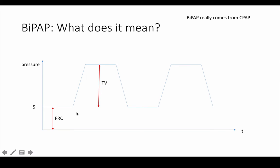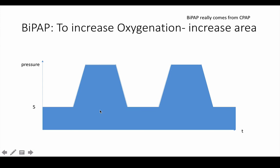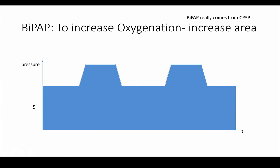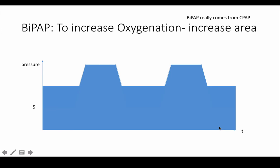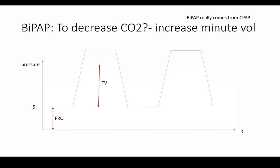This bottom part is the same as calling it the functional residual capacity, and this is the tidal volume. So if we want to increase oxygenation, we increase the area under the graph. If we want to decrease CO2, we increase the minute ventilation — we can increase tidal volume, which is this pressure-supported breath, or we can increase the rate at which it's delivered, and that will blow off more CO2. So increase of area under the graph gives you greater oxygenation; increase in your minute volume decreases your CO2.